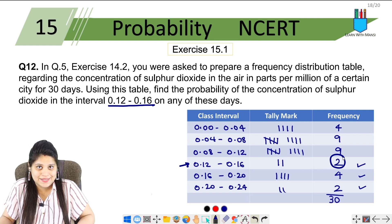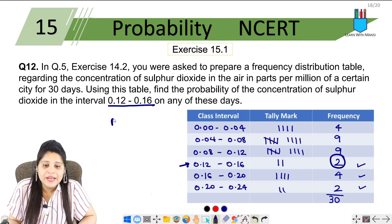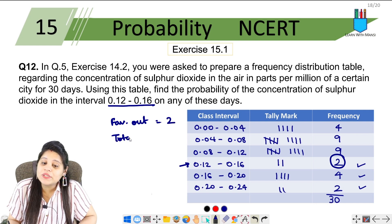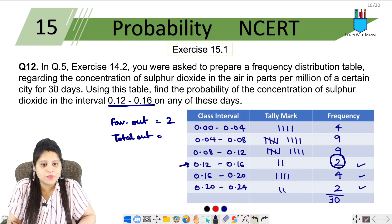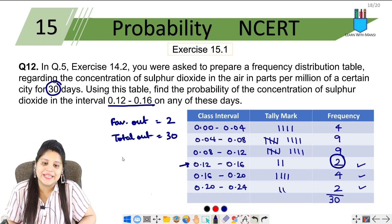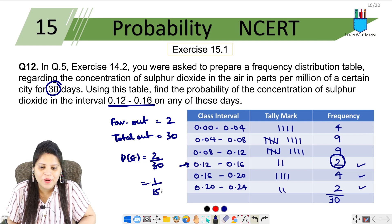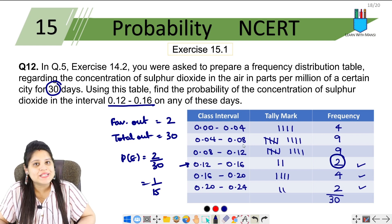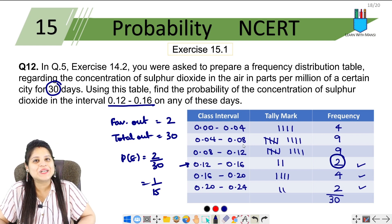So look, in the interval 0.12 to 0.16, there were two days. Therefore our favorable outcome is 2, and total outcome is total number of days. The question mentioned 30 days, so that means 30. Our probability will be 2/30, or we can write this as 1/15. This was our twelfth question of Exercise 15.1, let's quickly get to the next question which is the last question.